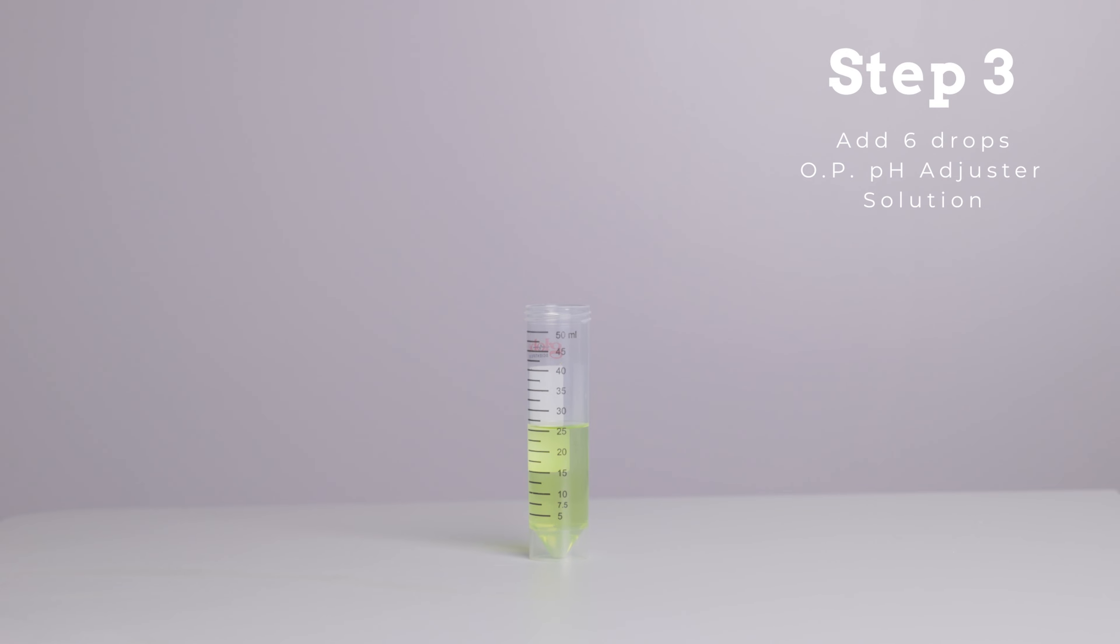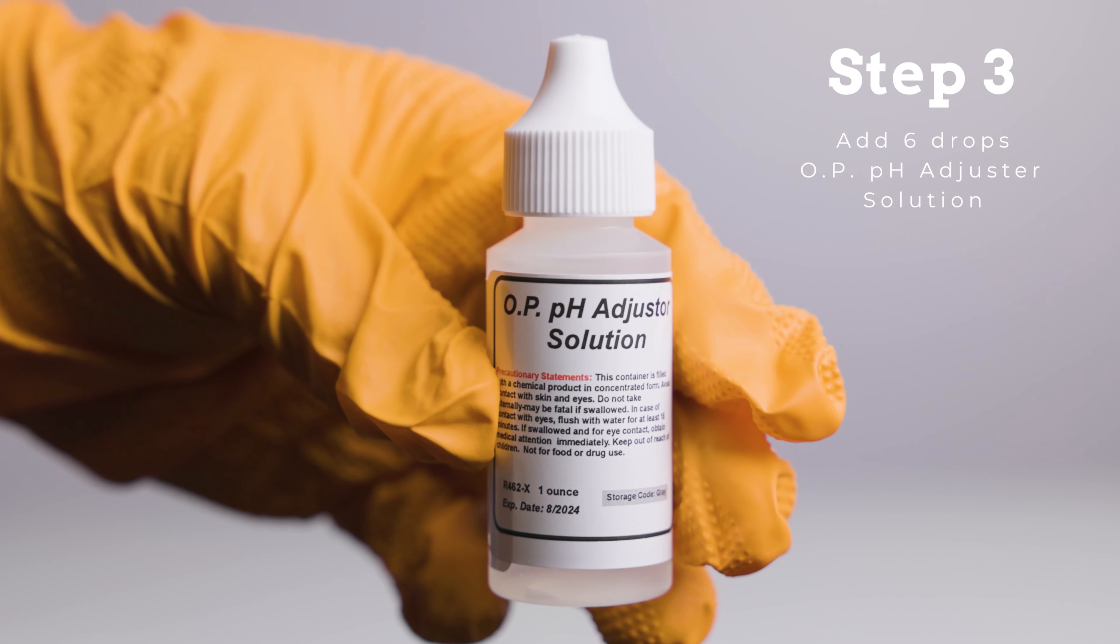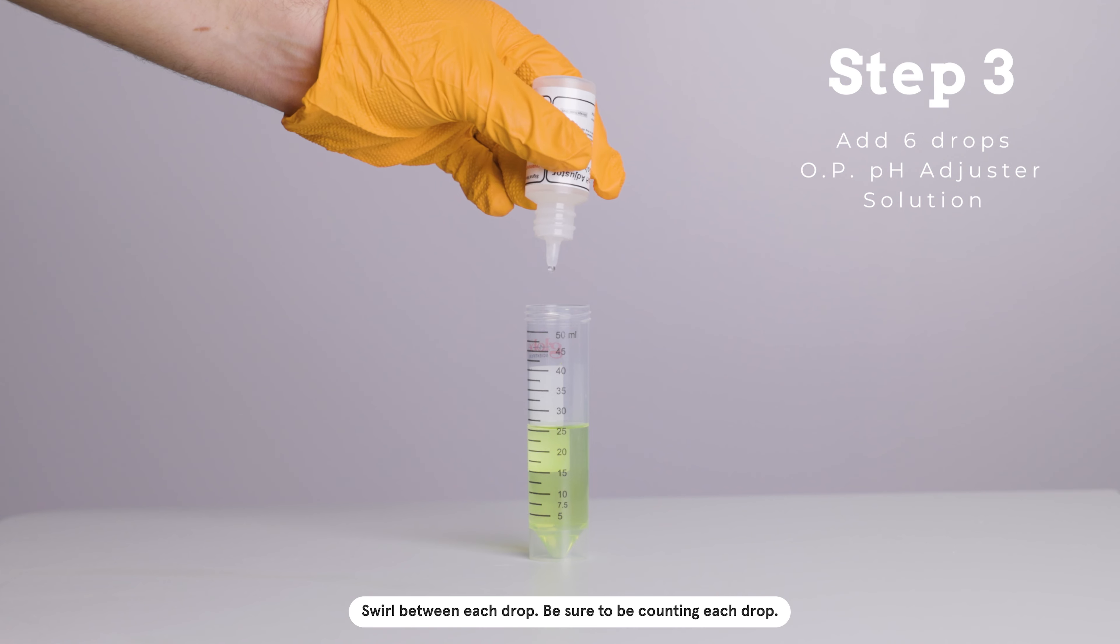Step 3. Add 6 drops of OP pH Adjuster Solution to the sample. Mix well. The sample should now be lime green in color.